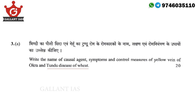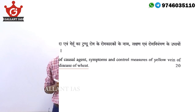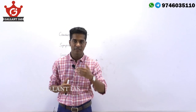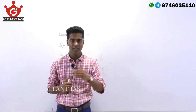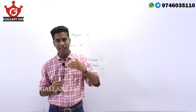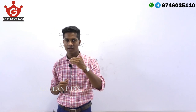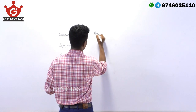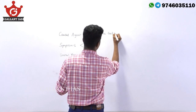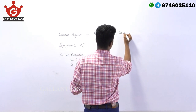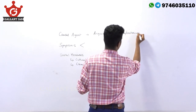Next is Tundu disease of wheat. Tundu disease of wheat is caused by the combined action of a nematode and a bacterium. The association of this nematode and bacterium brings about the Tundu disease. The nematode involved is Anguina tritici, and a bacterial pathogen is also associated with this disease.